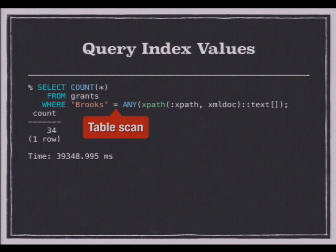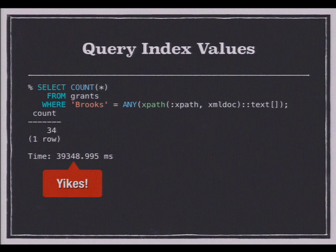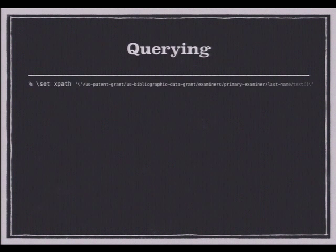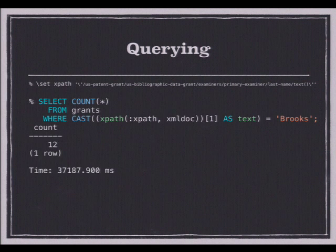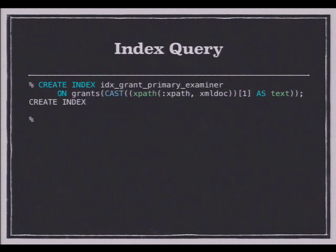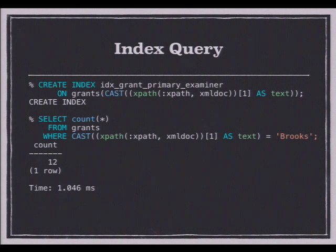However, if I want to know only grants where Brooks was one of the examiners, using the ANY operator, we're back to 40 seconds runtime. If we want to index scalar values, we can do that too. Here I'm getting just the first value in the returned array, casting it to text, and creating an index on that single value. When I execute the expression, we're down to just one millisecond. However, now I'm getting only 12 results instead of 30-something because I'm only checking if the primary examiner is Brooks.